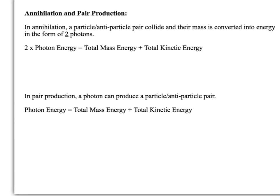So if you want to work out what the energy of those photons is, you can work out the total mass energy that the particles have. You can work out the total kinetic energy that the particles have. And then this would give you the total energy available to the photons, but each would get half of that energy. Okay, so that's annihilation.